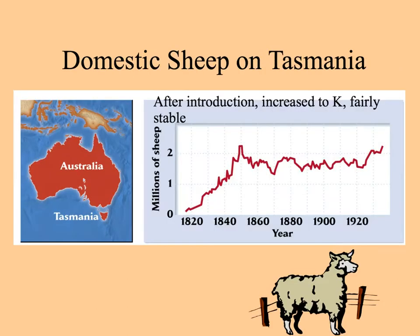When sheep were first brought to Australia, their numbers increased fairly steadily up to the carrying capacity, after which time the numbers were fairly stable — though they probably went a little above and below before settling there.